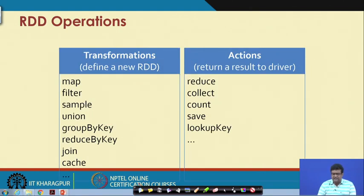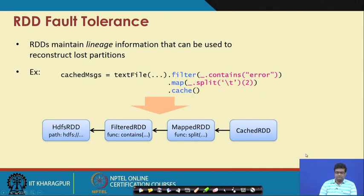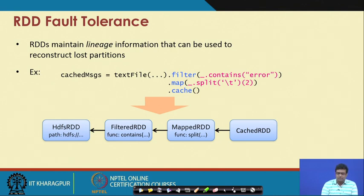Here is a more complete list of transformations which define new RDDs and actions which compute a value. RDDs maintain lineage information to reconstruct lost partitions. Let us now look at an RDD program.